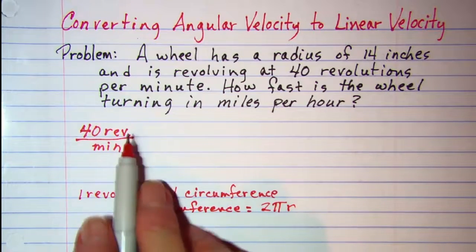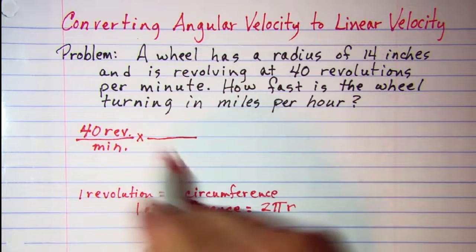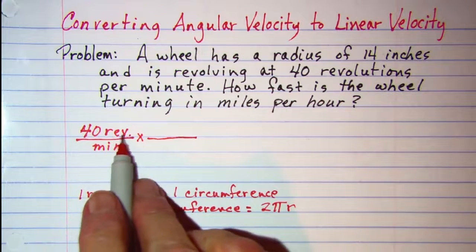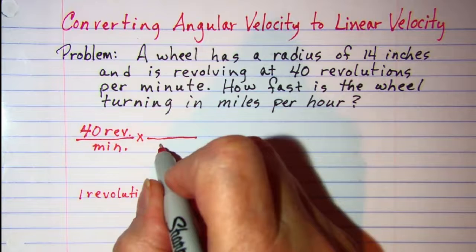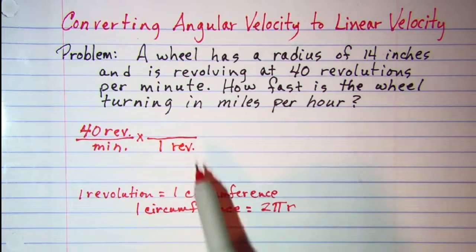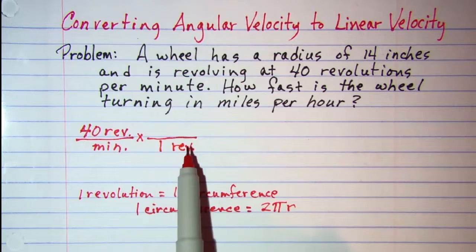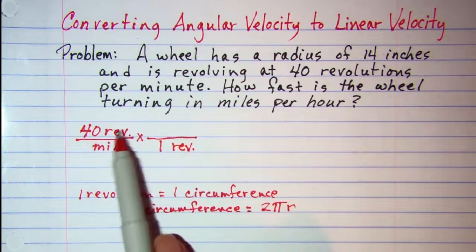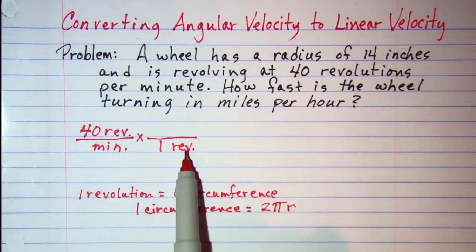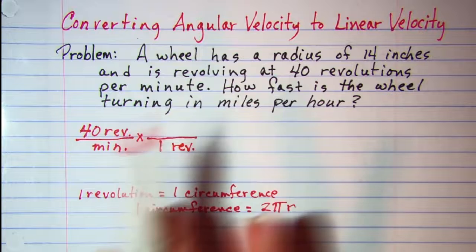So then I can use the unit multiplier. I want to cancel off revolutions. So I'm going to put one revolution in the denominator because we know that a factor in the numerator and a factor in the denominator that's the same, those will cancel. So the word revolution will cancel, no numbers just the words.